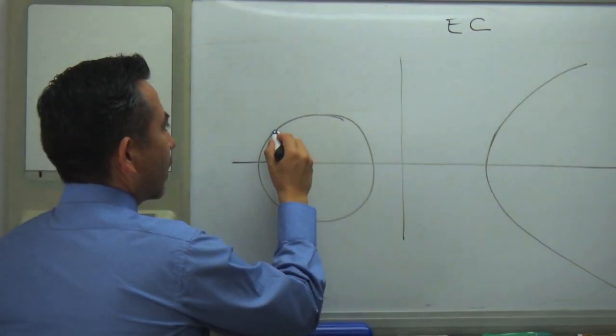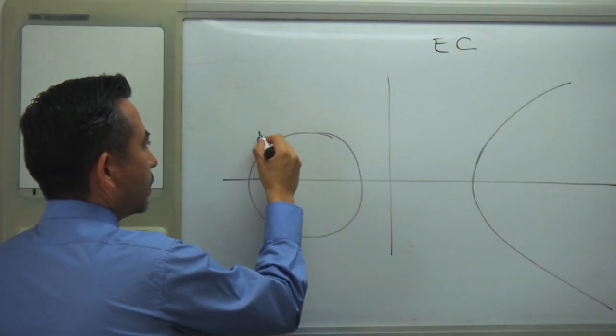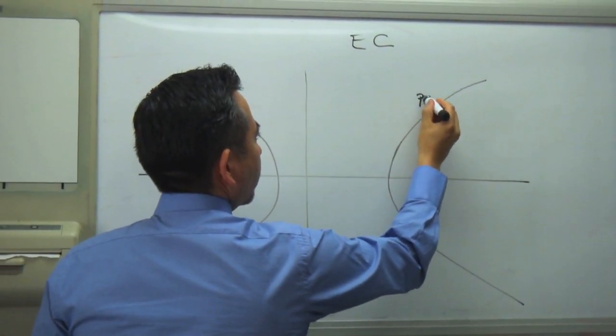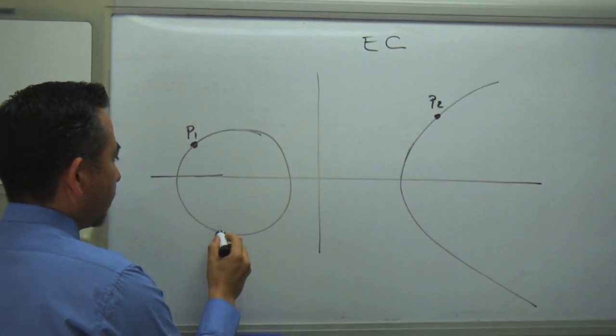So I will say that I have here one point, this is P1, and I have here P2, and I will say I have here P3.